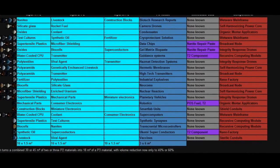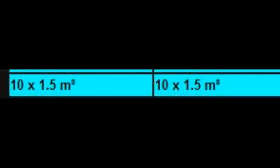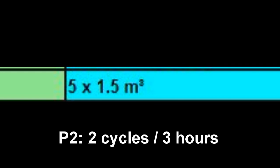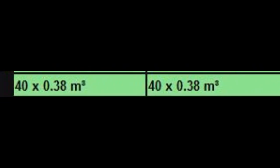Now let's look at our most difficult commodity — robotics. We need only 1 unit of robotics per hour to fuel our large POS. P3 items are processed at the rate of only 3 units per 60-minute cycle, so if we process a cycle once every 3 hours, we're set. However, this is a complex 3-stage chain. To run a single P3 cycle, we need 10 consumer electronics and 10 mechanical parts. P2 items are processed at 5 units per 60-minute cycle, so we need 2 cycles of each P2 material within that 3-hour window.